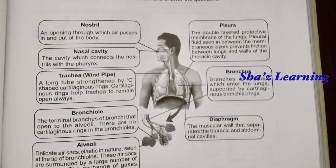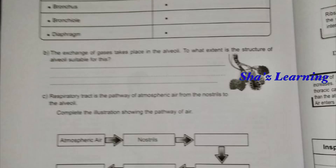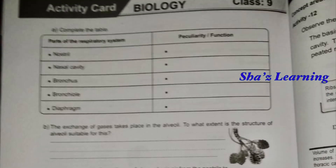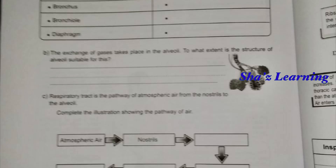Next, respiratory system: Nostril, Nasal cavity, Trachea, Bronchioles, Alveoli, Diaphragm, Bronchus, Pleura. I don't know how to do this function because this — Nostril, Nasal cavity, Bronchus is shown here. This picture is shown here. This is the same. You can do a lot of questions.